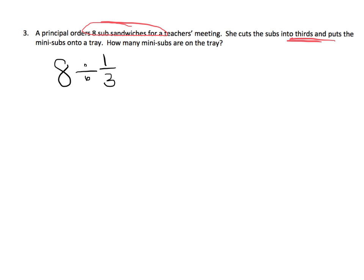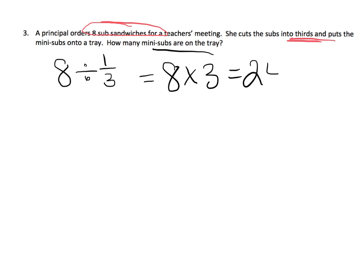She puts the mini subs onto the tray — how many mini subs are on the tray? We've started to learn that this is asking how many thirds fit into 8. Well, we know 3 thirds fit into one whole. So 8 times 3 equals 24. The answer is there are 24 mini subs.